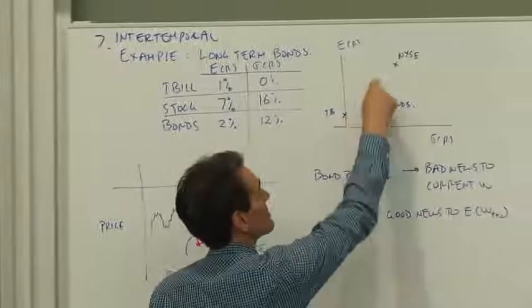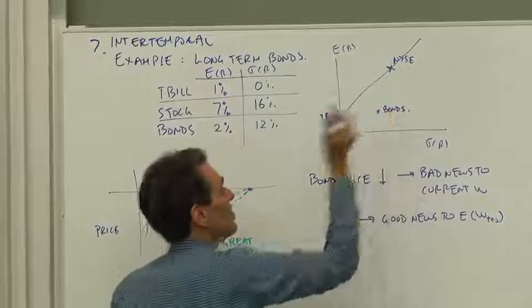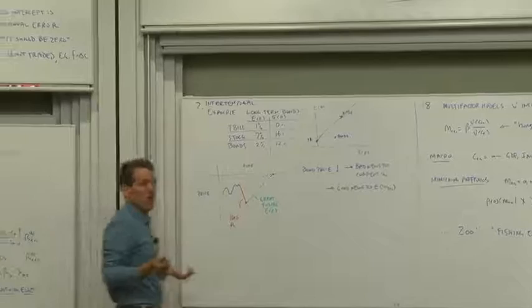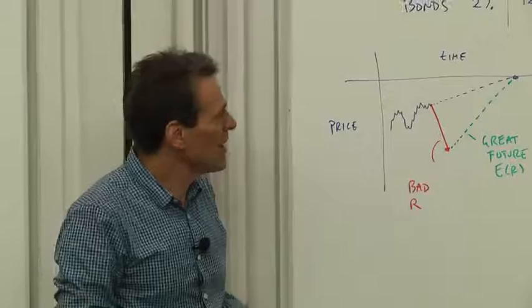If we plot them in mean variance space, treasury bills here, it might be here. The NYSE might be there. Portfolios that combine the two might be there, and long-term bonds are down there. Lots of standard deviation, no mean. Why does anybody hold them? How can that low mean persist in equilibrium?